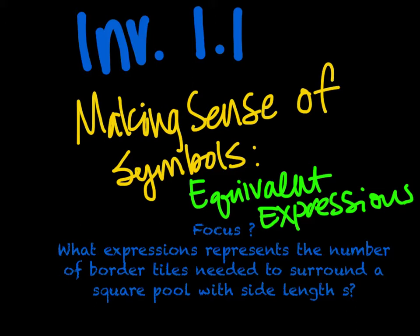Our focus question is: what expressions represent the number of border tiles needed to surround a square pool with side length S? We're going to be looking specifically at square pools and border tiles around them, and start to build ideas we can morph into new situations for algebraic equations.